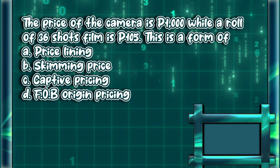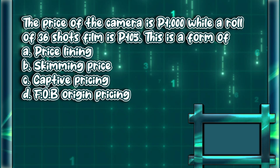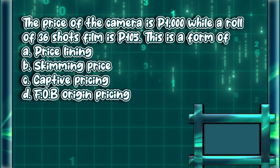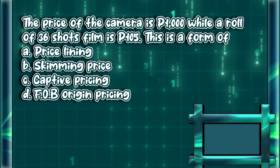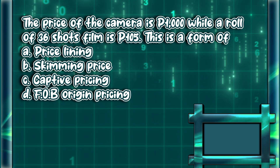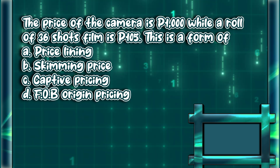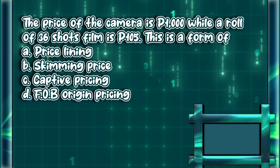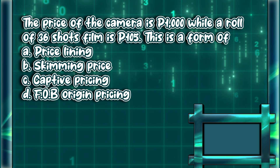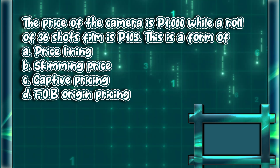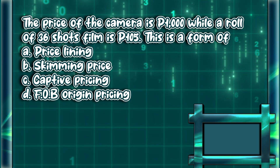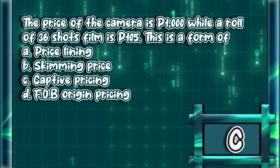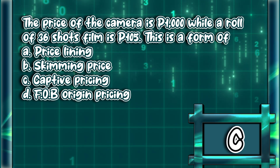The price of the camera is 1,000 pesos, while a roll of 36 shots film is 105 pesos. This is a form of. A. Price lining. B. Skimming price. C. Captive pricing. D. FOB origin pricing. The answer is letter C.